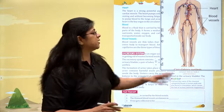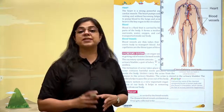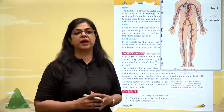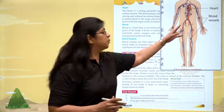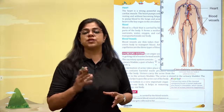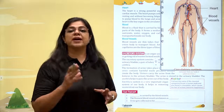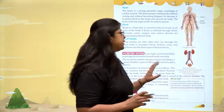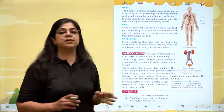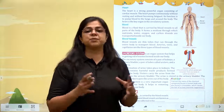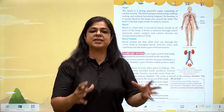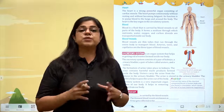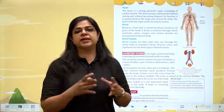As you can see here, the red blood vessels are the ones which have oxygen-rich blood, and the blue blood vessels are the ones which have carbon dioxide-rich blood. So together, the heart, the blood, and the blood vessels make up the circulatory system.